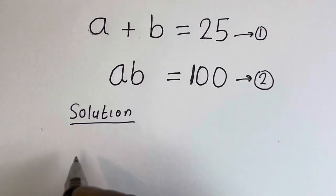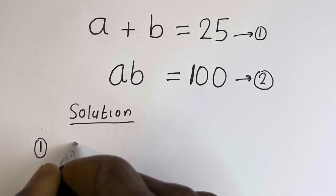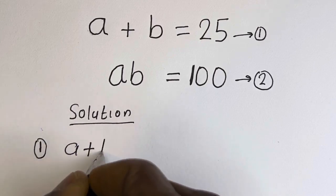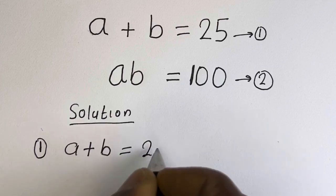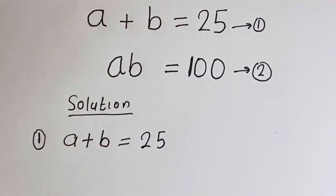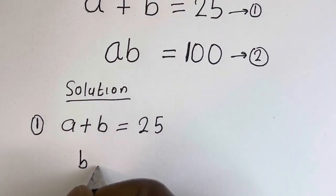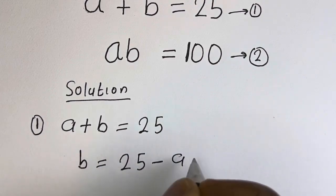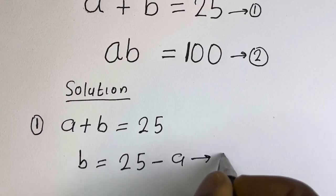Now from equation 1, A plus B is equal to 25, so B is equal to 25 minus A. Let's call this equation 3.